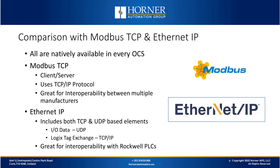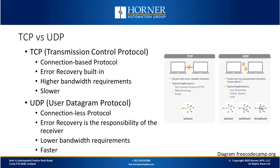Now let's compare that with Ethernet IP. Ethernet IP includes both TCP and UDP message types. For IO type data, Ethernet IP uses UDP just like Ethernet global data does. For exchanging logic data tags from logic CPUs it utilizes TCP/IP. If you need an OCS controller to interoperate with Rockwell PLCs, Ethernet IP is a great choice. Now let's look at TCP versus UDP in more detail.